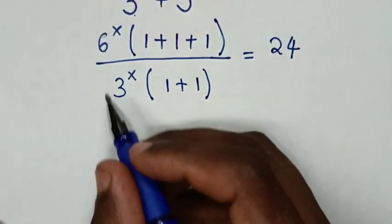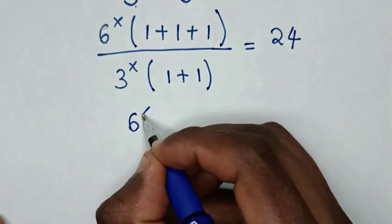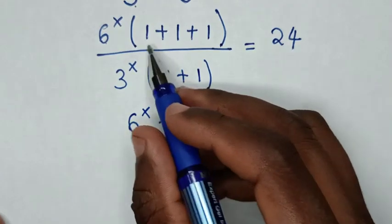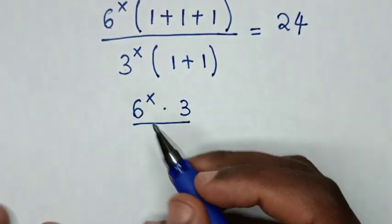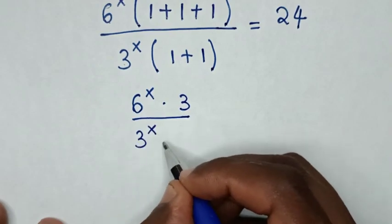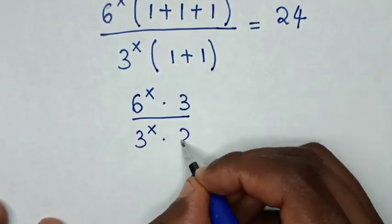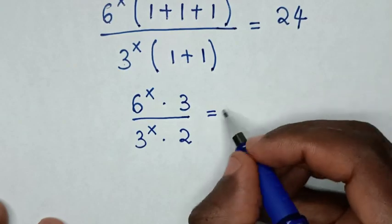Then our equation will be 6^x times (1 + 1 + 1) is 3, over 3^x, then times (1 + 1) is 2, is equal to 24.